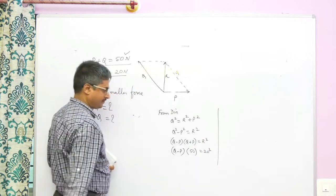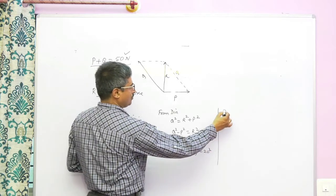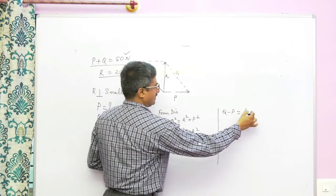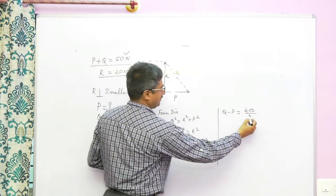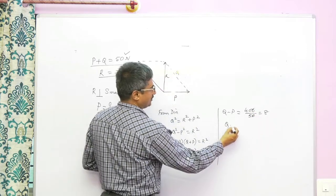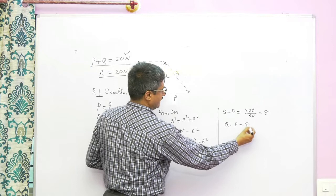Therefore, q minus p equals 400. 20 square is 400 by 50, so this comes out to be 8. Therefore q minus p equals 8.